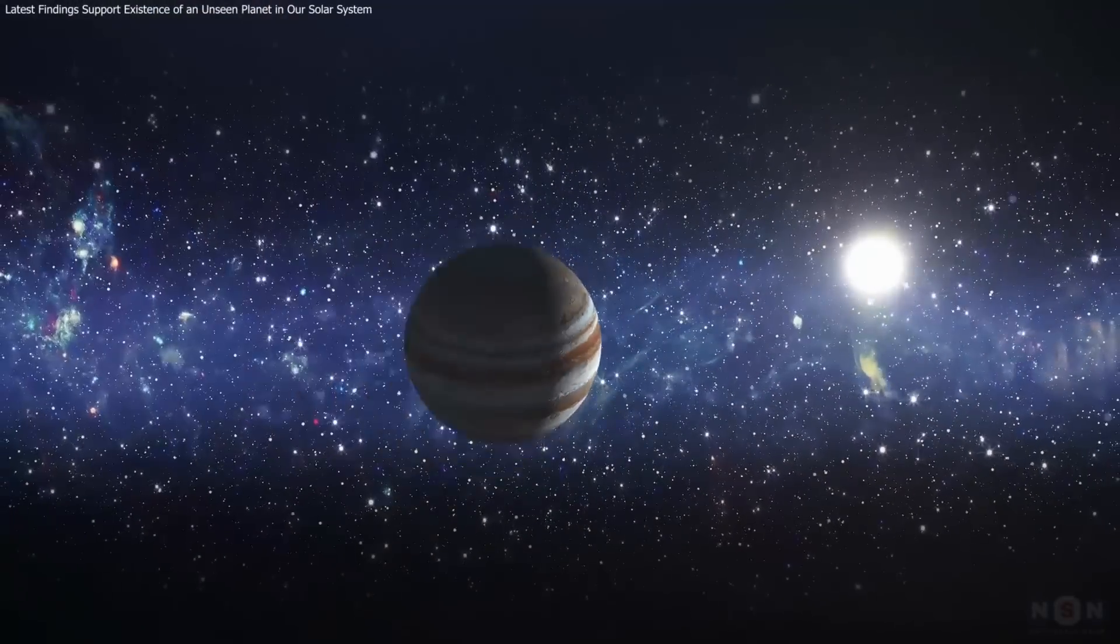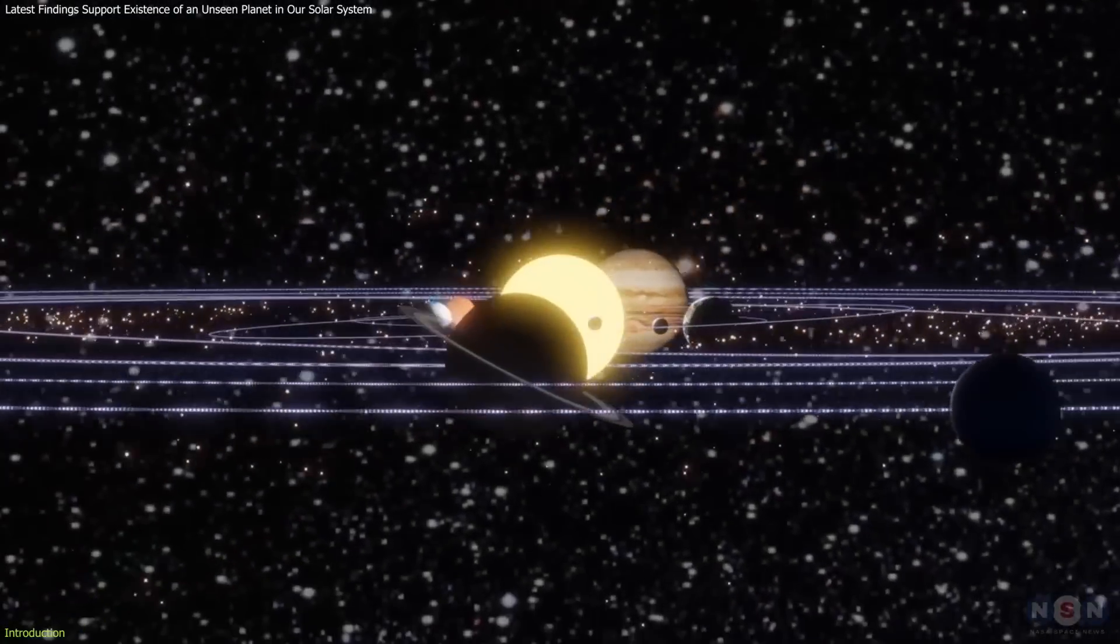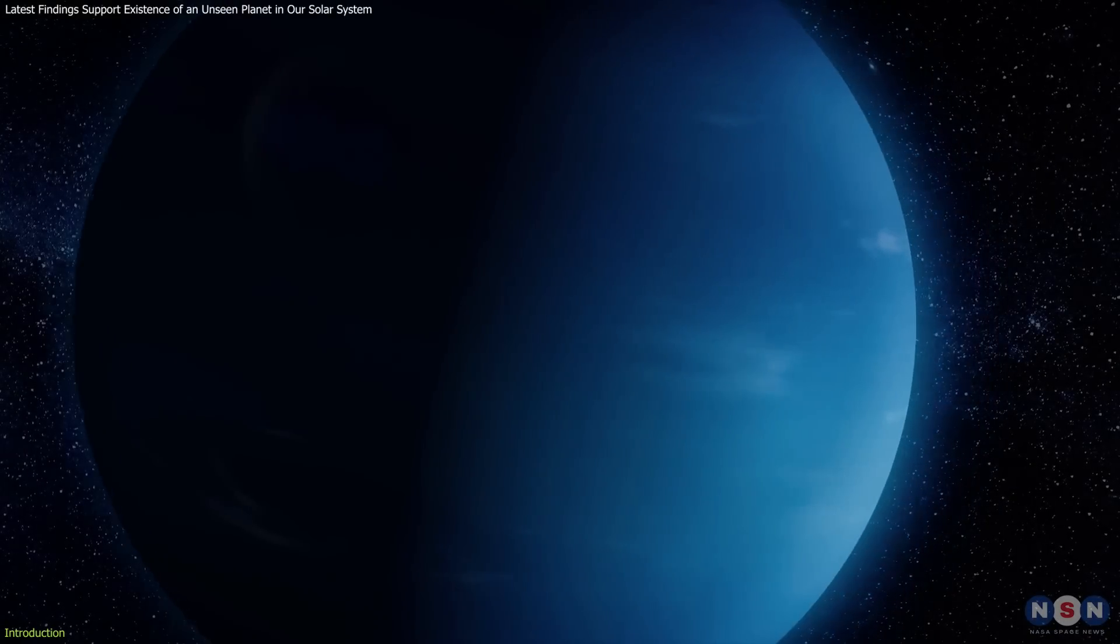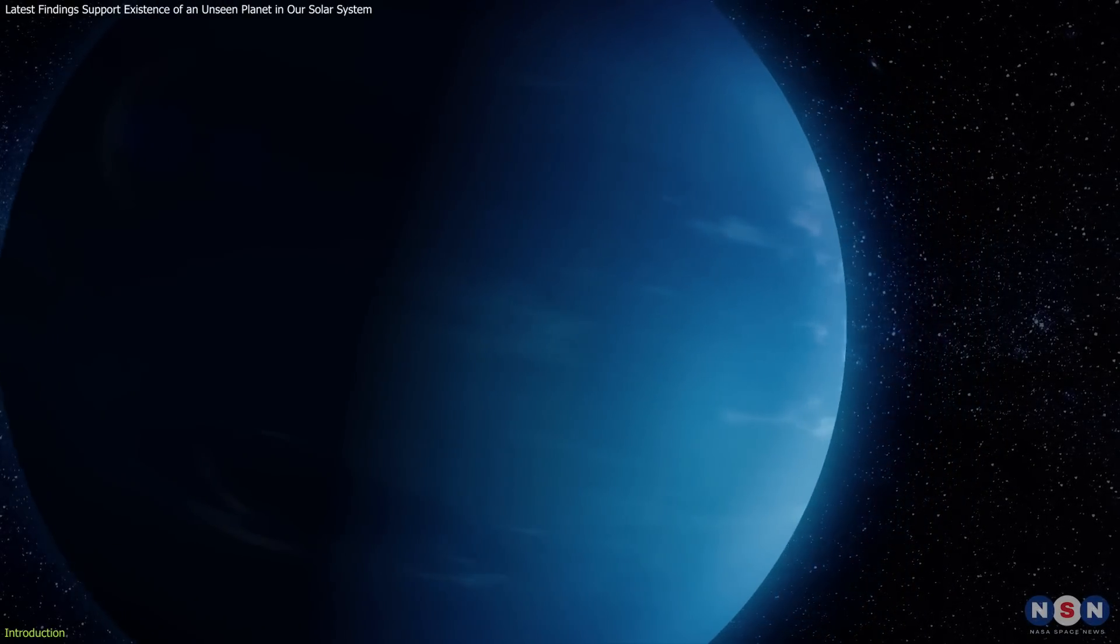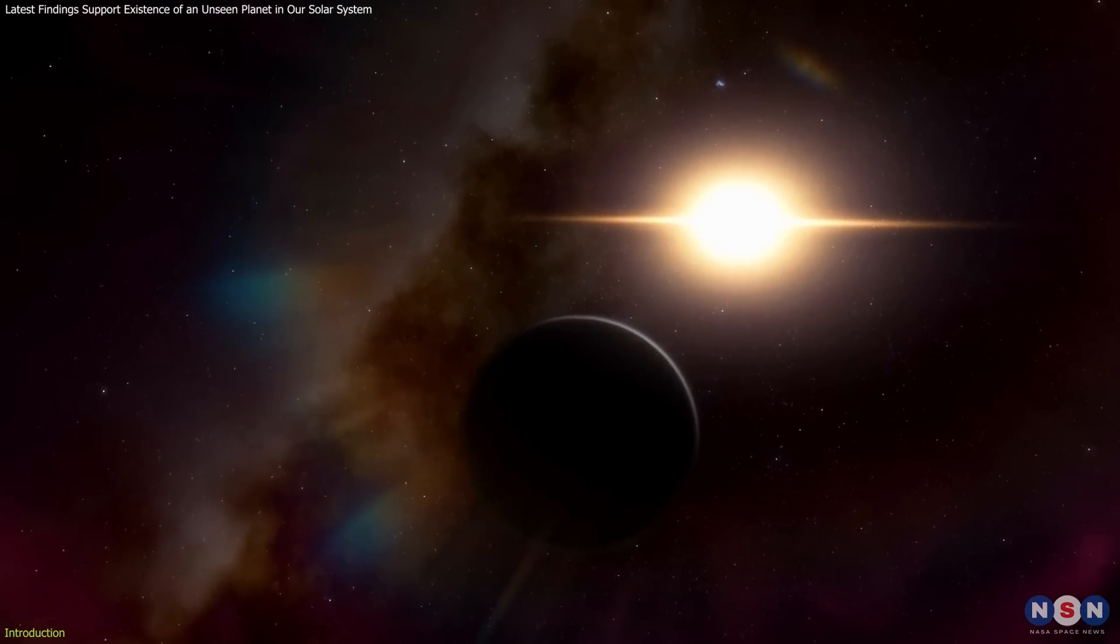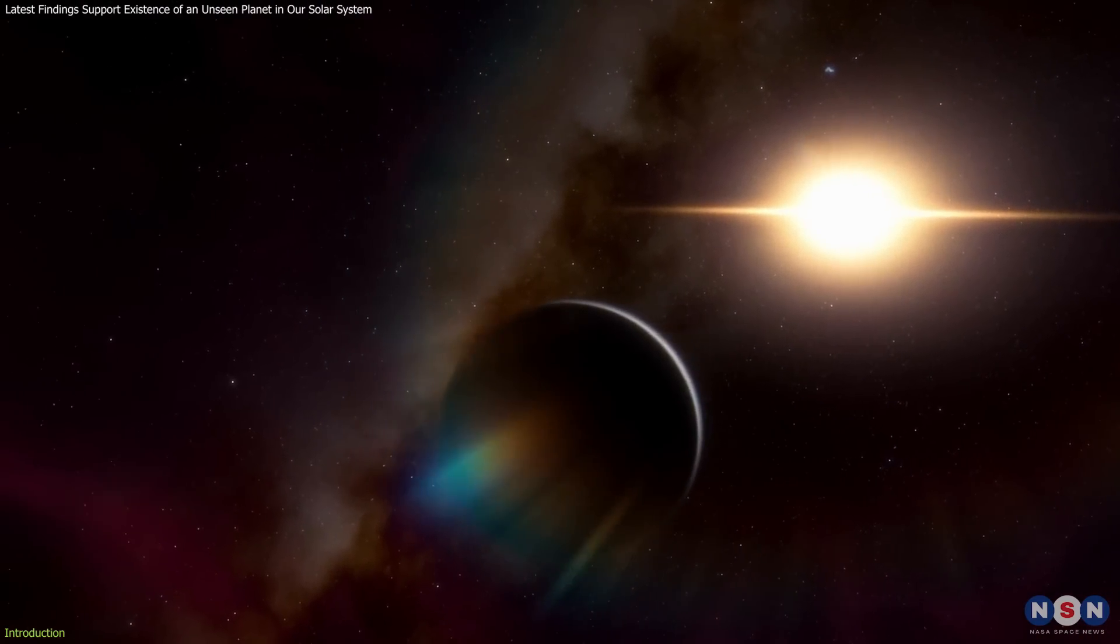In the outer reaches of our solar system, hidden forces shape the paths of distant celestial objects, hinting at the presence of an unseen planet. Dubbed Planet 9, this elusive world could hold the key to unlocking new aspects of our cosmic environment.